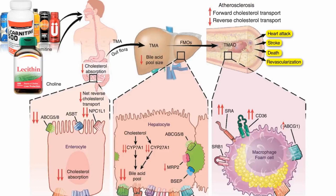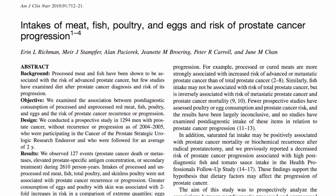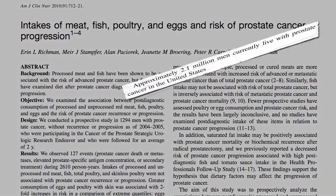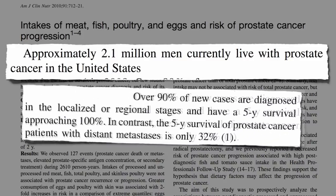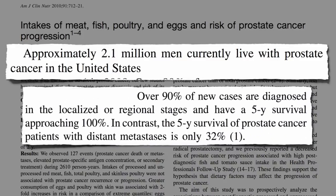About 2 million men in the U.S. are living with prostate cancer. That's better than dying from it — catch it when it's localized and your five-year survival is practically guaranteed, but once it really starts spreading, your chances drop to about one in three.